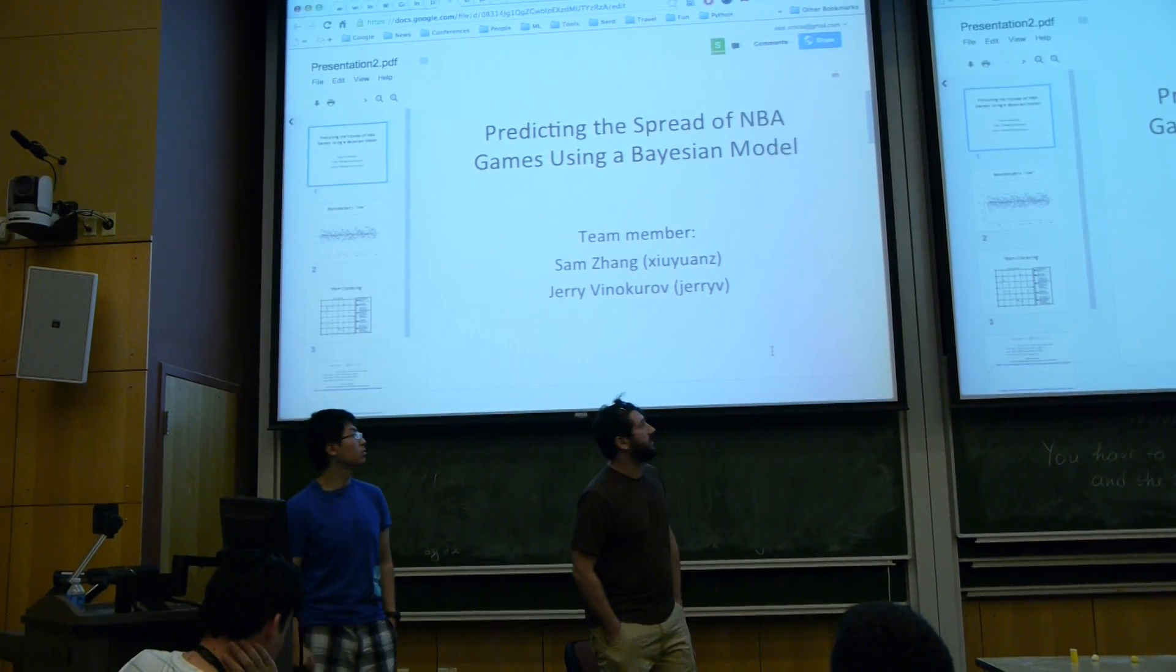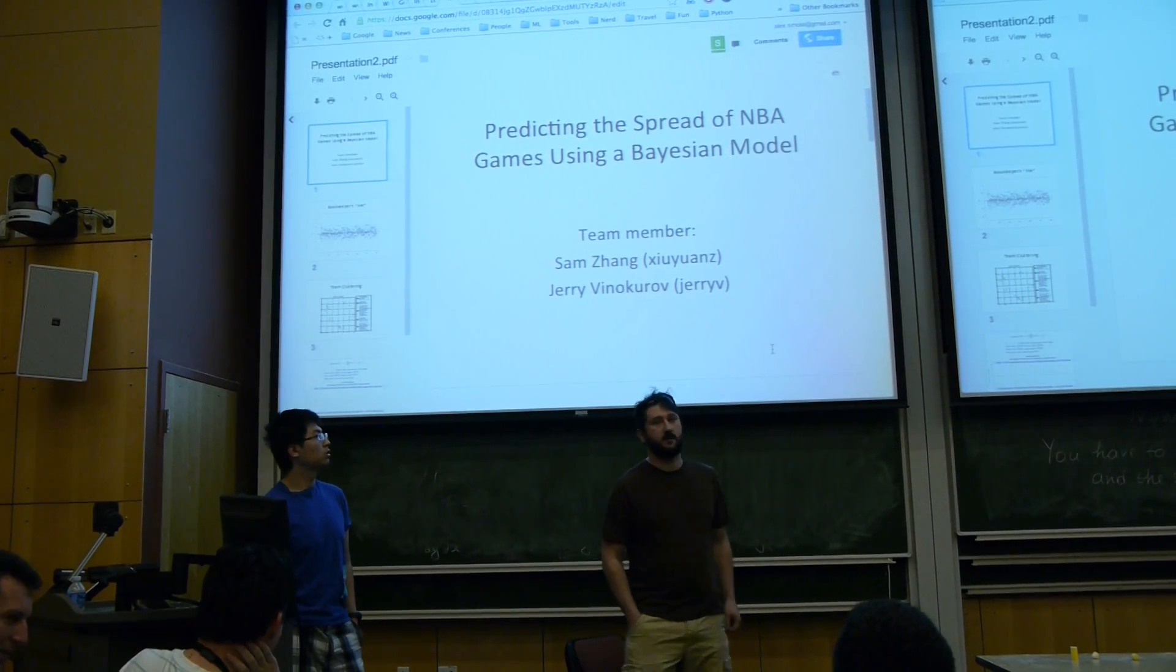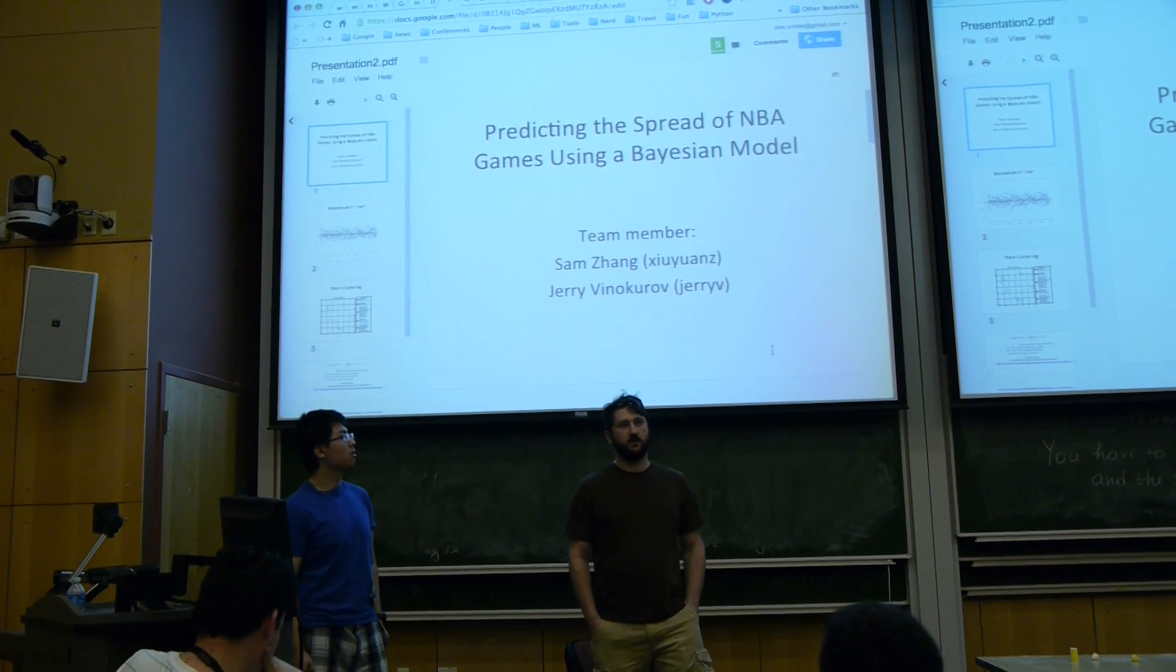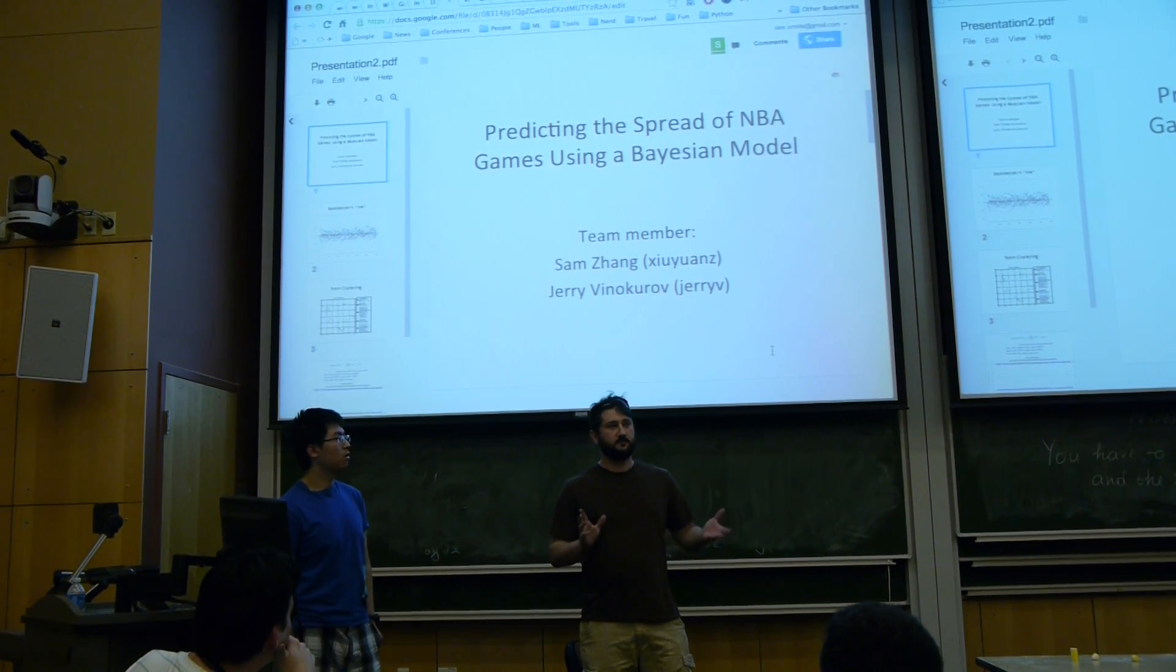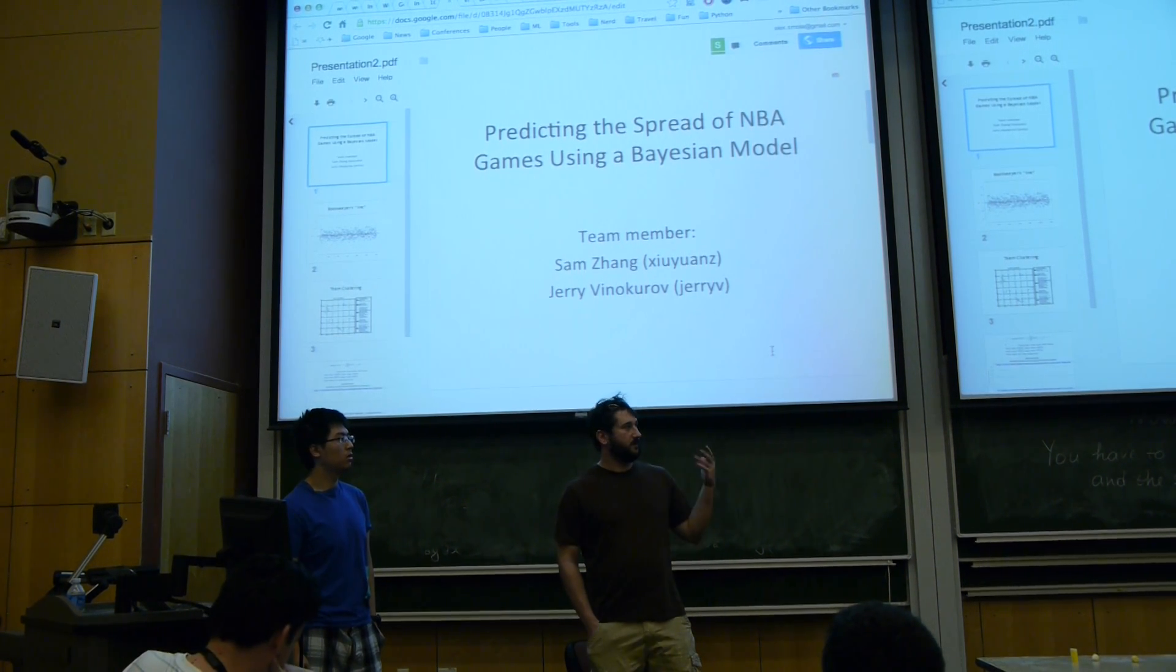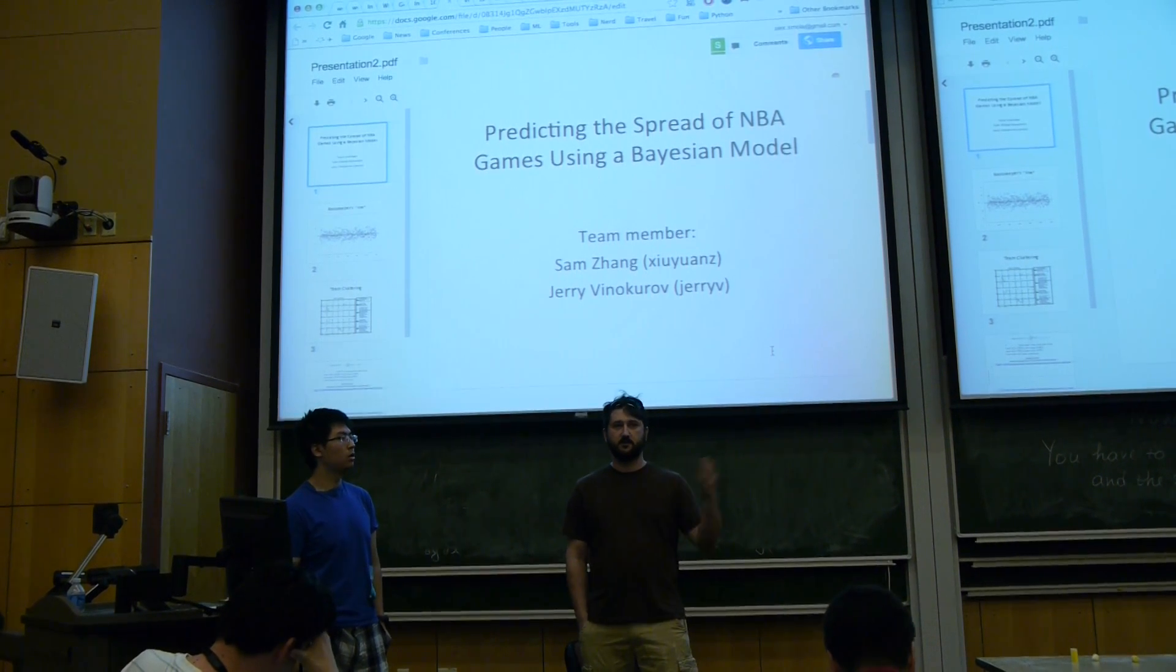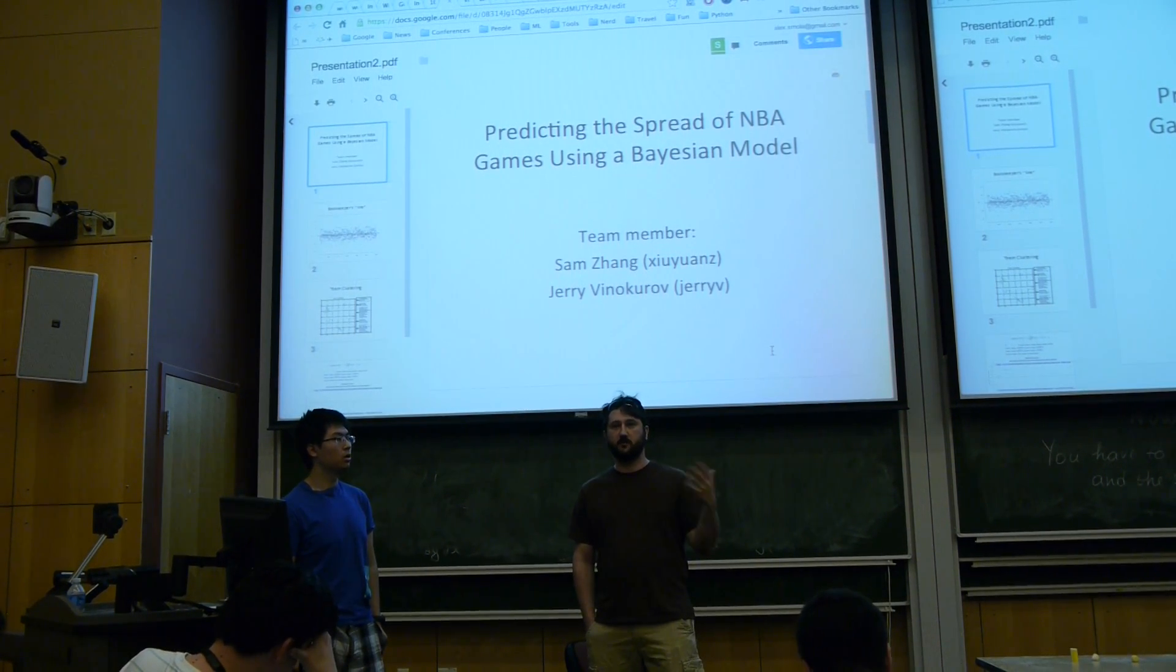It's about trying to predict the spread of NBA games using a Bayesian model. The basic problem that we're looking at is a bookmaker sets some odds for an NBA game. Basically they give a certain number where some team is favored by a number of points.